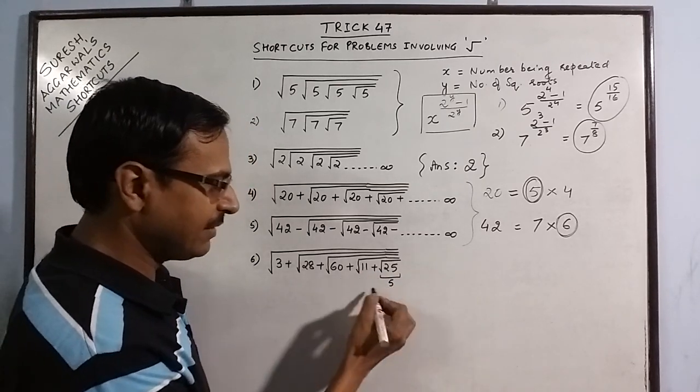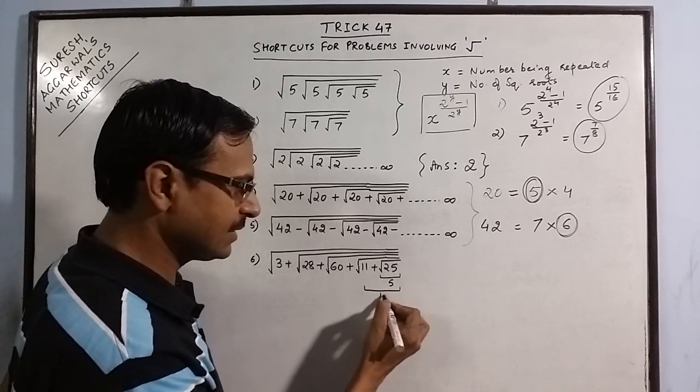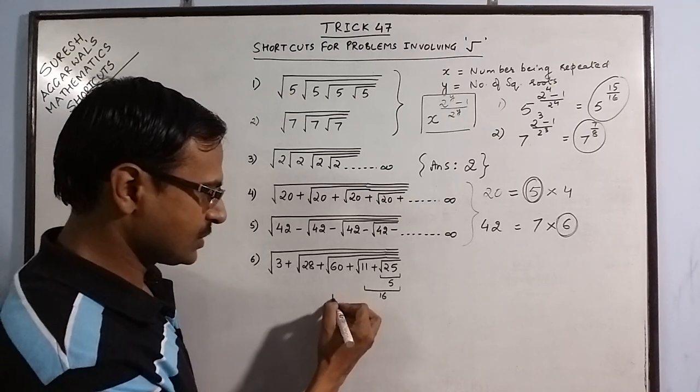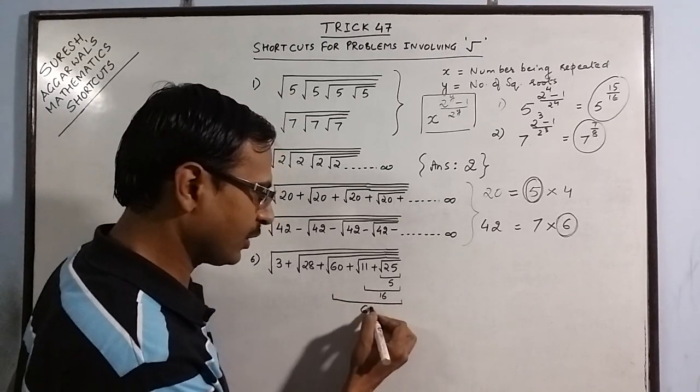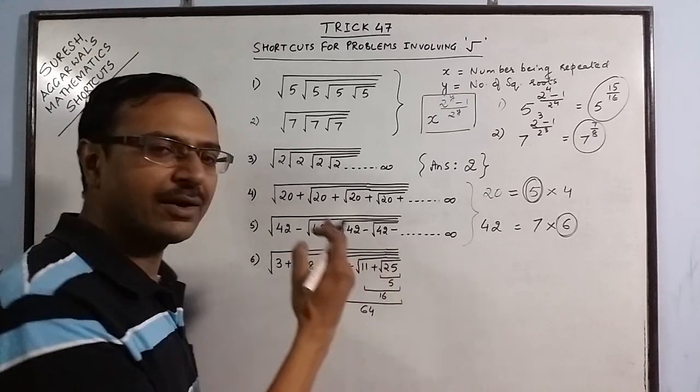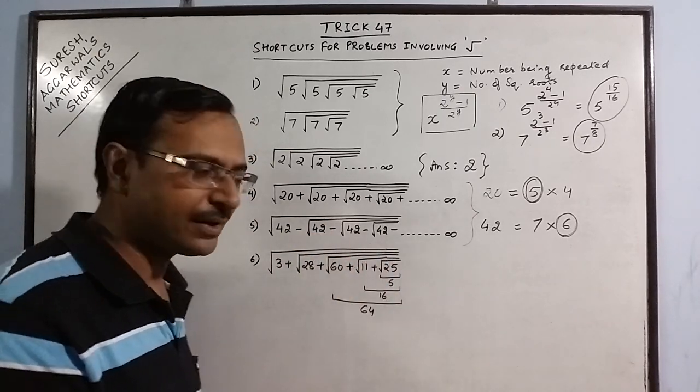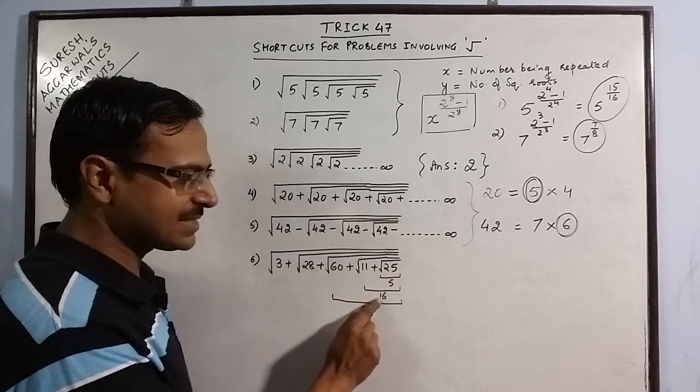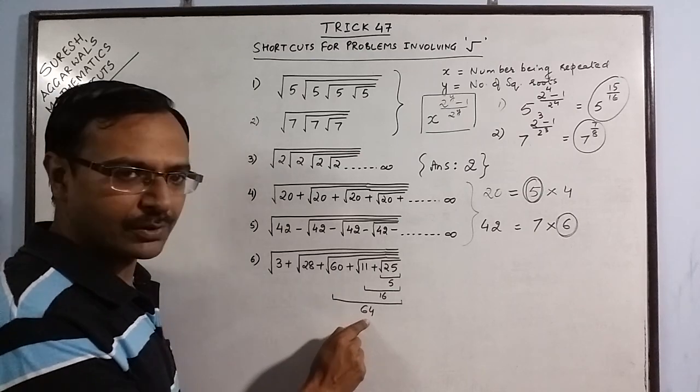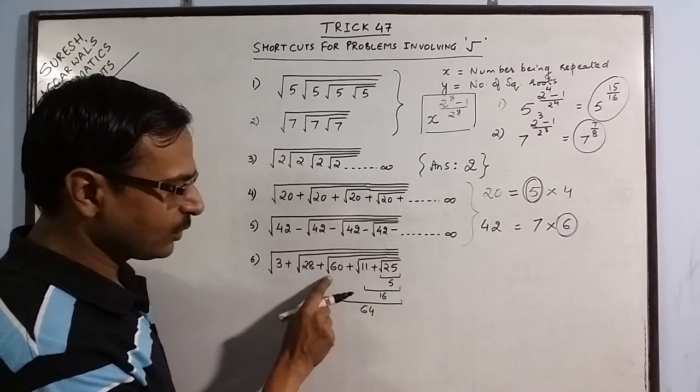11 plus 5 is 16. Square root of 16 is 4. 60 plus 4 is 64. Likewise, you carry on removing one square root after the other. Square root 25 is 5. 5 plus 11 is 16. Square root 16 is 4. 60 plus 4 is 64. Square root 64 is 8.